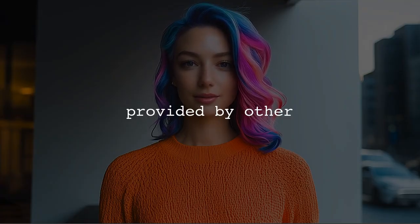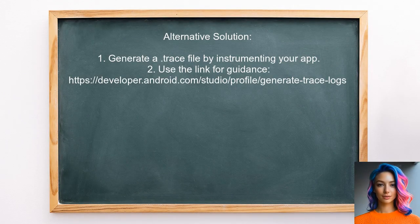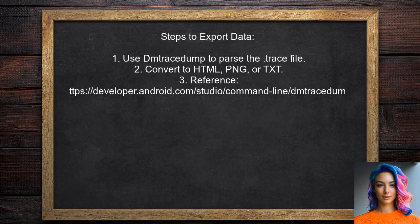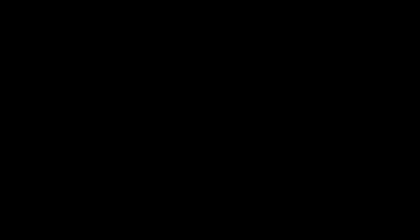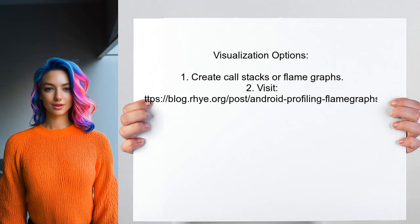Now let's look at answers provided by other users. An alternative approach involves using a .trace file to gather profiling data. You can generate a trace log by instrumenting your app, which provides valuable information. Once you have the .trace file, you can utilize DM Tracedump to convert it into formats like HTML, PNG, or TXT. For visualizing the data, consider using tools to create call stacks or flame graphs.